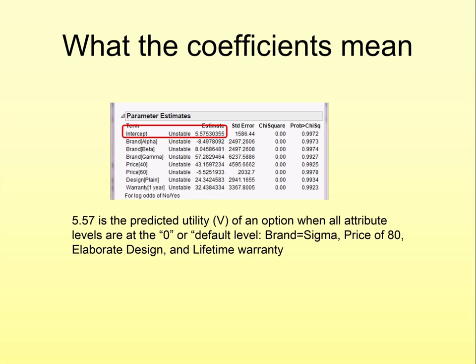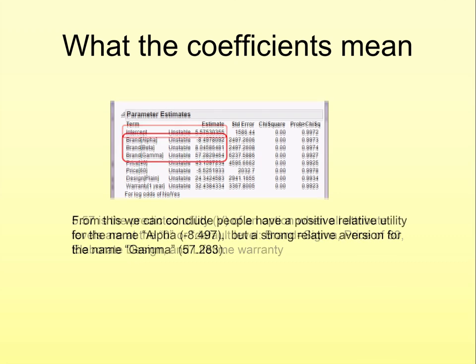Now, the more important elements that we care about are the ones that were managerially more important are those for the different levels of the attributes. Now, the way you interpret each of these is that they represent the relative degree of lack of preference for a given attribute level compared to the base or default level, which has a value of zero by definition. So, in this table, the way we would interpret 57.28 value for brand gamma is that the respondent had a real dislike for this brand relative to the default brand, sigma, which has, by definition, a value of zero. Now, in contrast, the fact that alpha has a negative value of 8.49 means that the respondent liked the name alpha more than sigma.